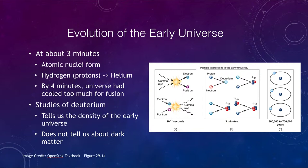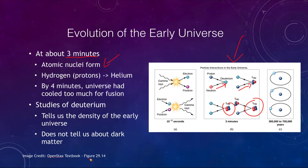Getting to about three minutes, we're actually starting to form atomic nuclei. Protons and neutrons combined to form deuterium — a form of heavy hydrogen — which could then help form helium-4, the standard helium we see. This is what was going on in those first few minutes after the Big Bang: the universe was like a gigantic star fusing hydrogen into helium. But by the time we reach four minutes, the universe had cooled too much to fuse elements together.